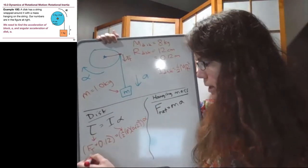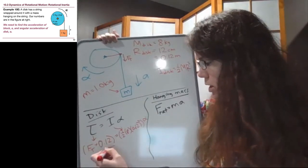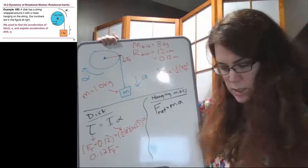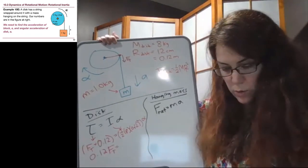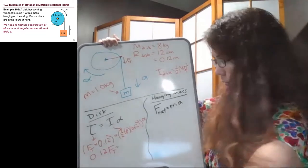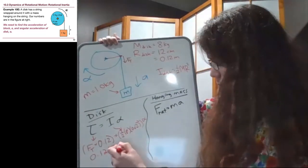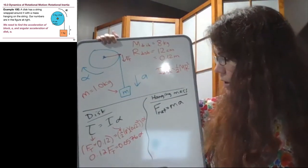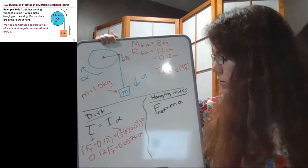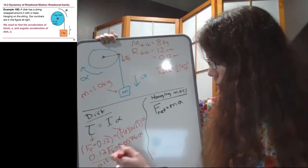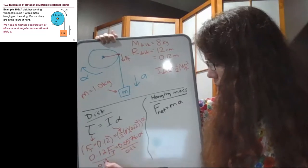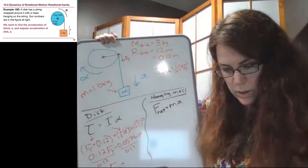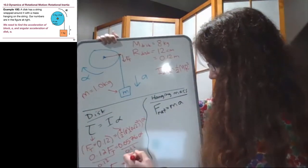So let's simplify this a little bit. So we have 0.12 times our unknown tension. And then we have 0.5 times eight times 0.12 squared. And that is 0.0576 times alpha. All right, so we'll leave this here for now. Maybe we'll solve for tension. So we'll divide both sides by 0.12. So here's our tension now is 0.48 alpha.